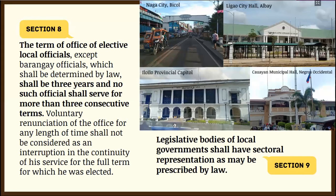According to Section 8 of Article 10, the term of office of elected local officials — except barangay officials, whose term is determined by law — shall be three years, and no official shall serve for more than three consecutive terms, totaling a maximum of nine years. Voluntary renunciation of the office for any length of time shall not be considered as interruption in the continuity of service for the full term for which the official was elected.